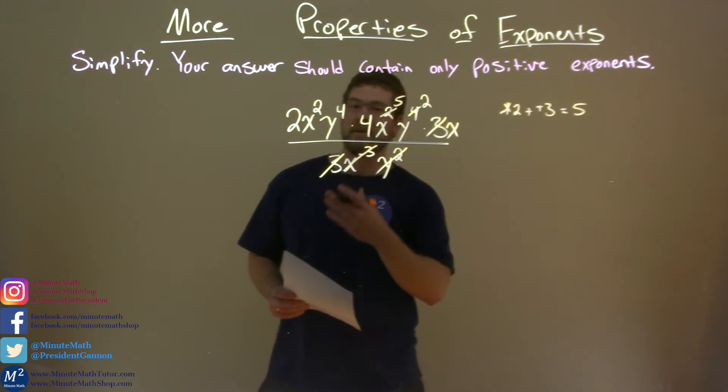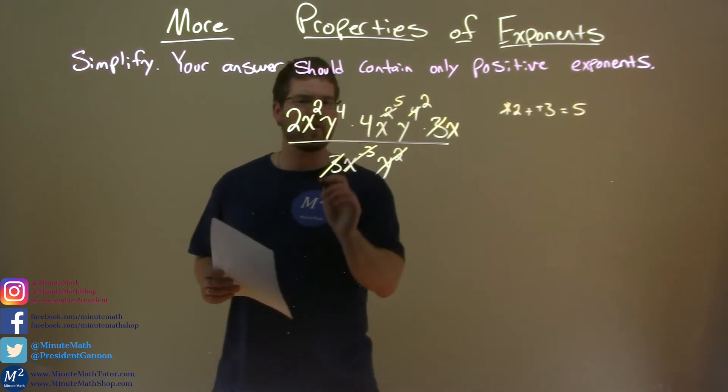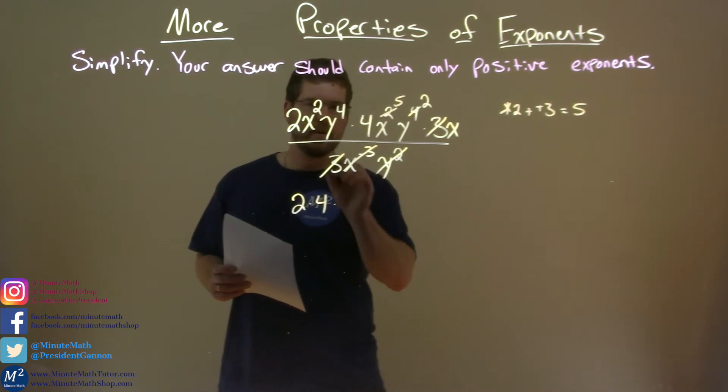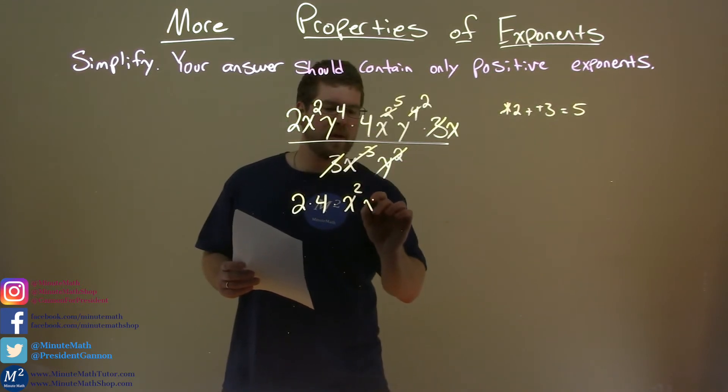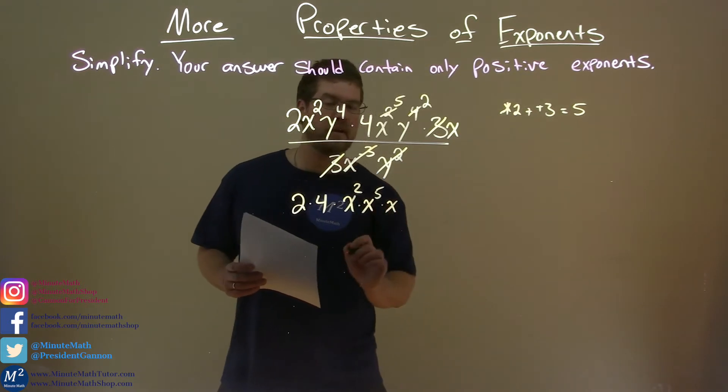Now I have nothing left in the denominator. So let's rewrite this. Let's put all of our numbers first here. We have 2 and a 4, got those down, times x squared, so the x's. Then we have x to the fifth power. We have both x's here. Oh, and that one x over here. Can't forget that.